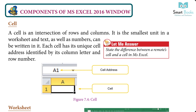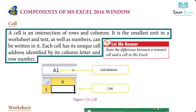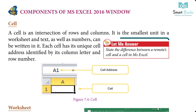Cell: A cell is an intersection of rows and columns. It is the smallest unit in a worksheet, and both text and numbers can be written in it. Each cell has a unique cell address identified by its column letter and row number.